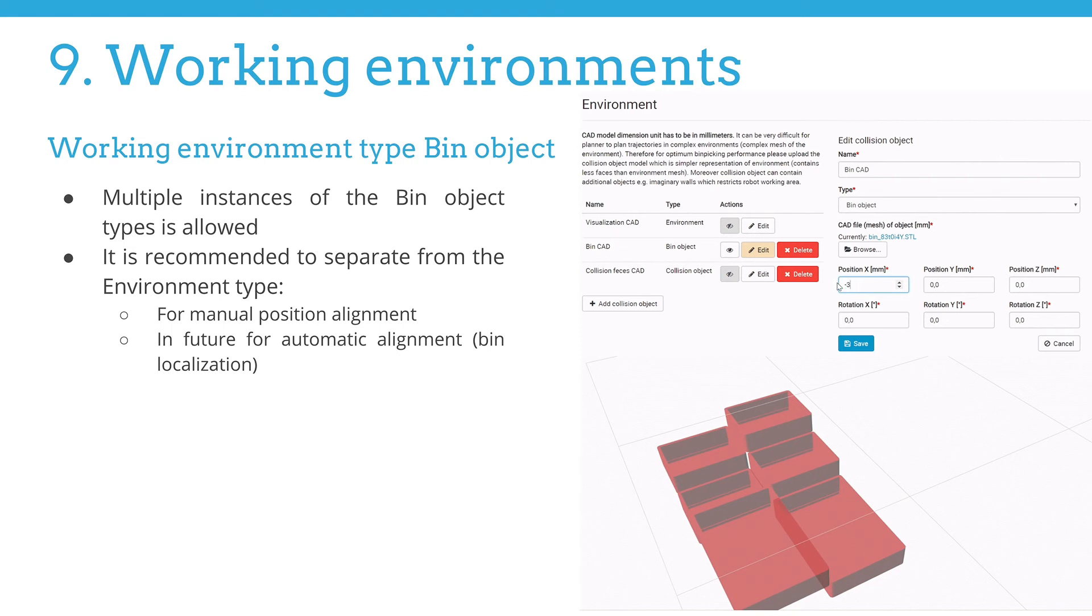The second working environment is called bin object. As the name states, this object represents a bin with the parts. As opposed to the previous type, you can load multiple instances. This object is not mandatory and in theory can be part of the previous type. However, we strongly recommend separating it since you can then utilize the option to adjust its position. There are several ways to check the alignment of the virtual representation of the bin and the real appearance. We will cover these in the next episode. Any adjustment of the position is done with respect to the local origin of the CAD model of the bin. Translation and rotation around all three axes are allowed.